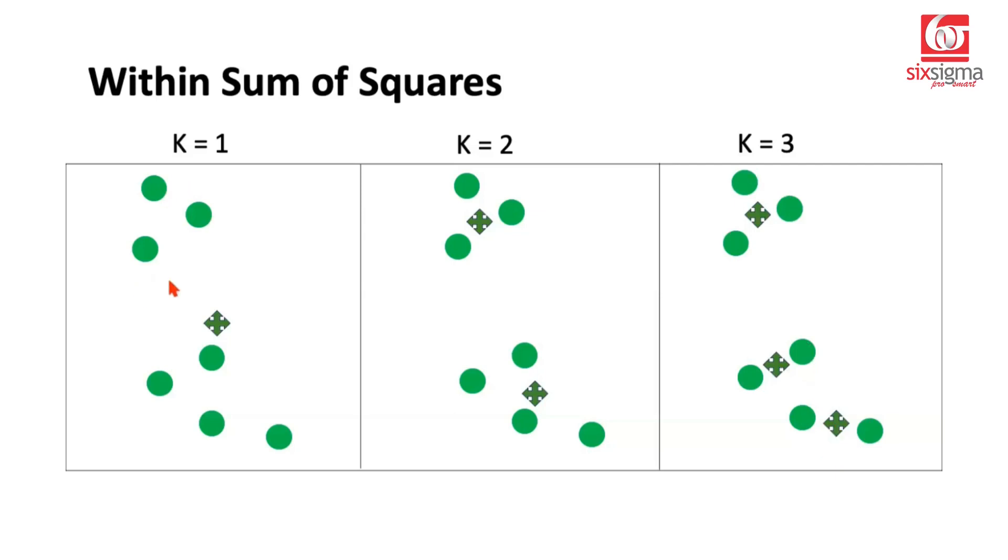Now let's join each point to its respective centroid. In case one, we'll be seeing these kinds of lines. So within sum of squares is nothing but these squared distances added up. You square each of these distances and sum them up. That will be the within sum of squares for K equals one. What will be the case when we have two clusters?